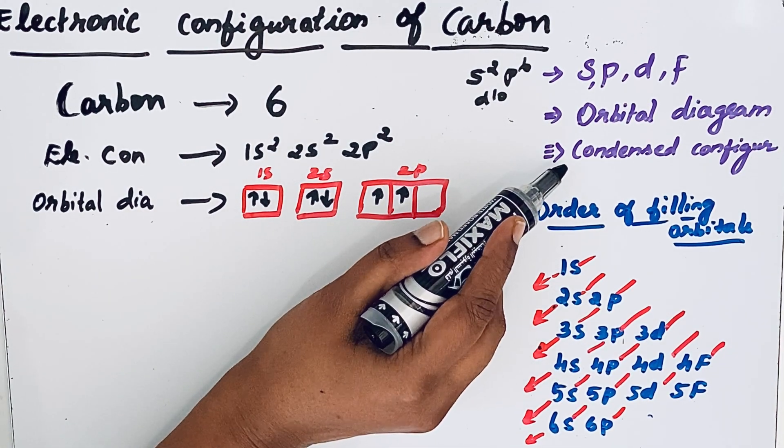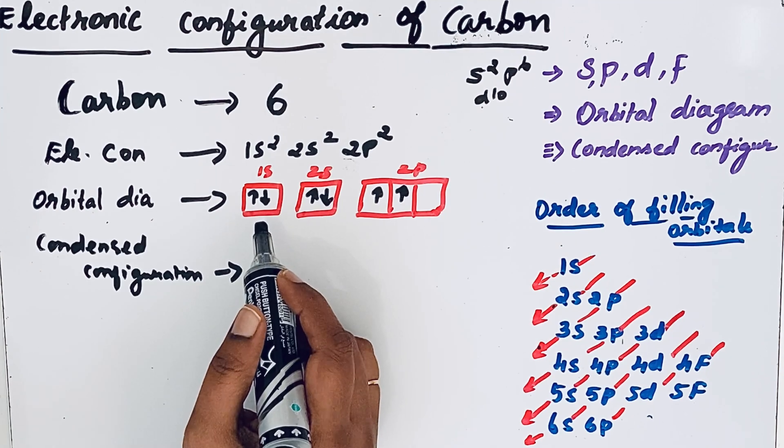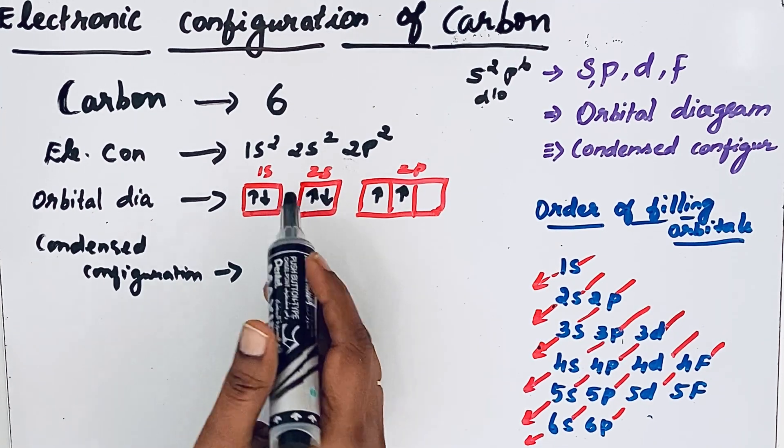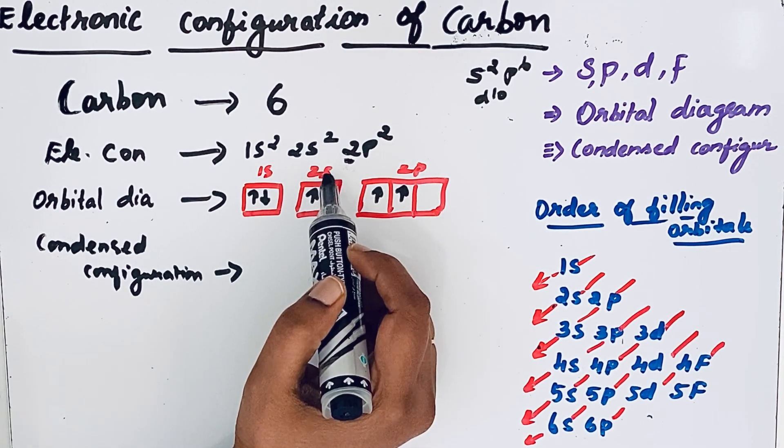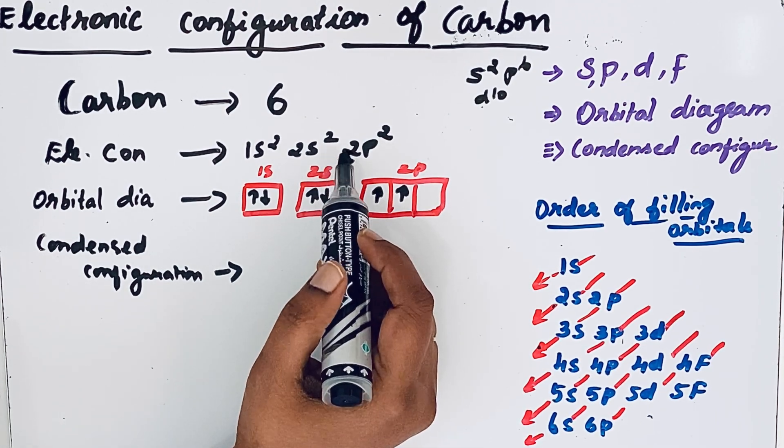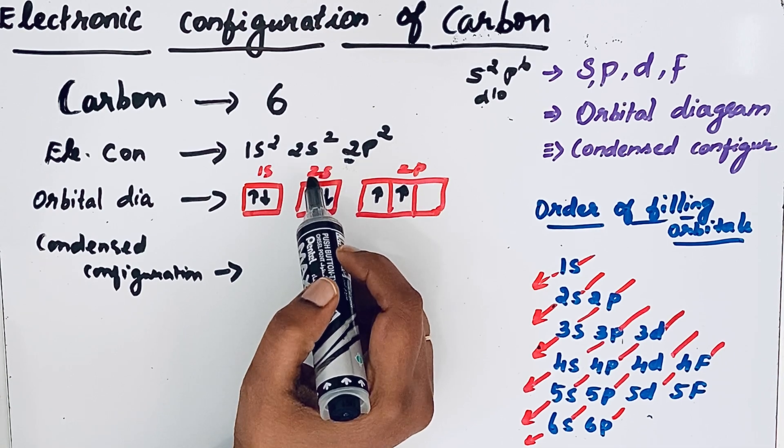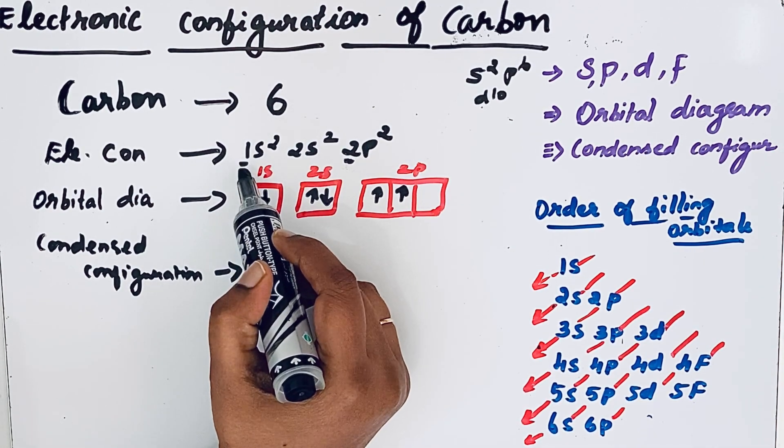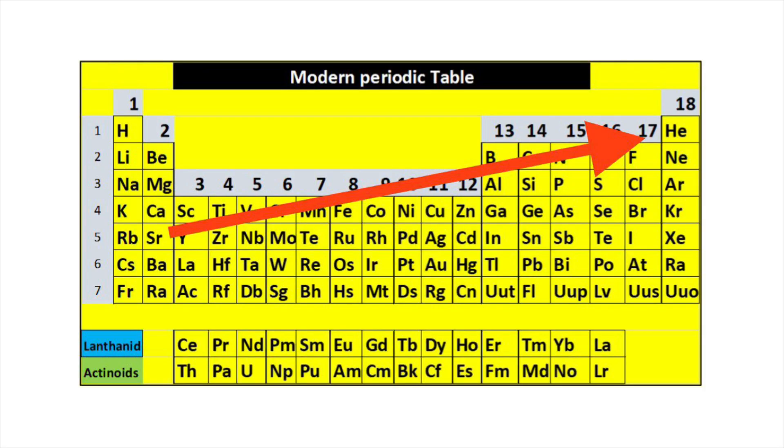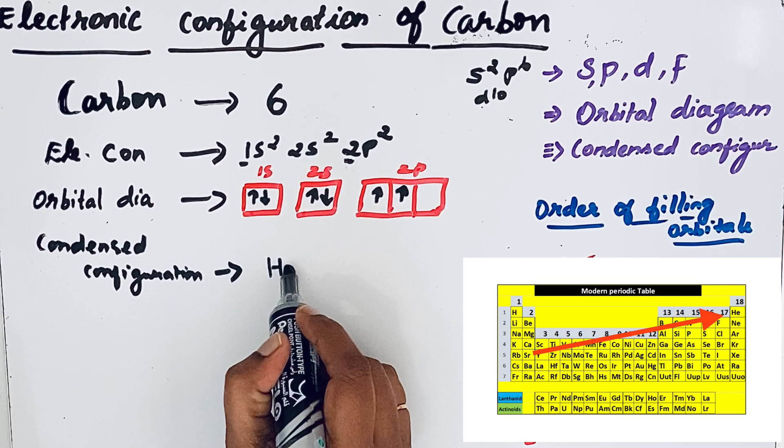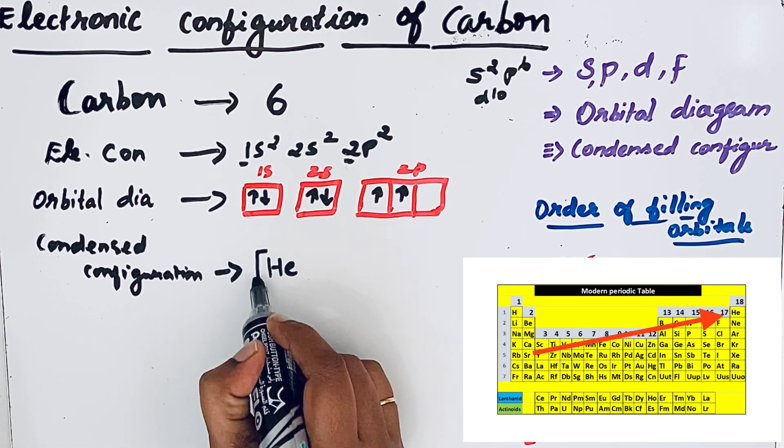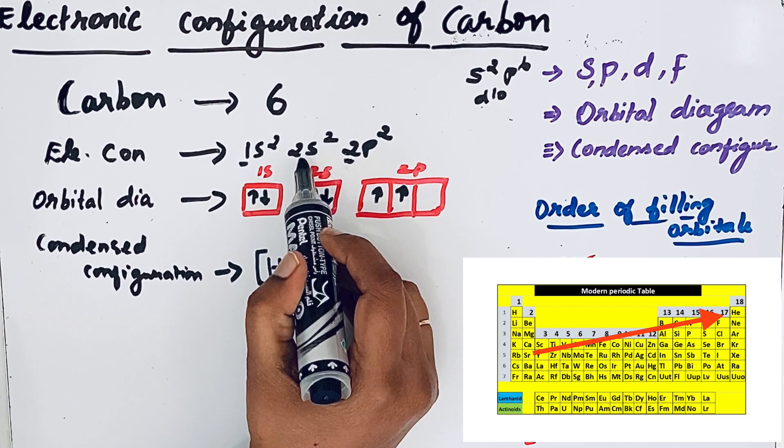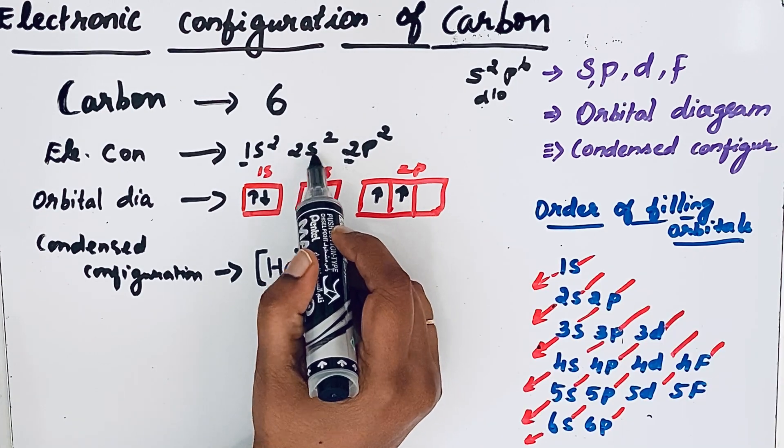Next we will write that condensed configuration. Here that electronic configuration is simplified by using that noble gas. For example, carbon is in the second period, so to simplify that carbon's electronic configuration, the noble gas which is in the first period is used. Helium is an element which is in the first period. We are writing helium. While writing, we should write that helium inside the bracket, and remaining the outer shell 2s2 2p2.